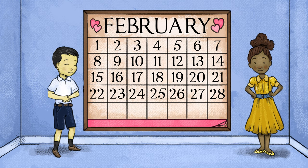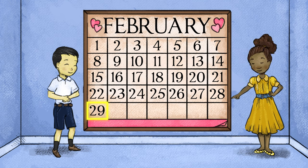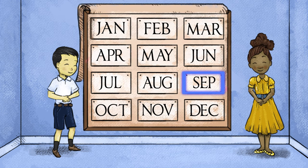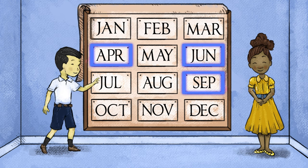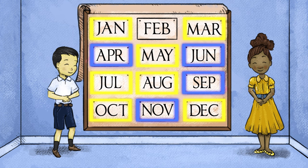How many days are in each month, it's clear. February has 28, but 29 each leap year. 30 days have September, April, June, and November. The rest have 31.